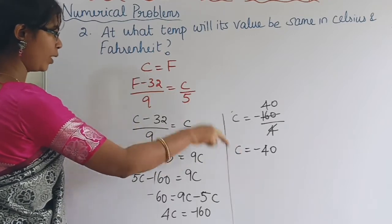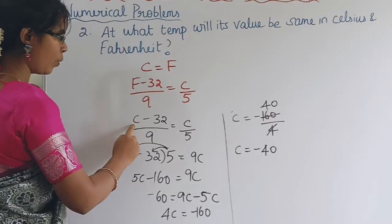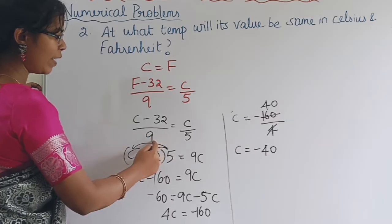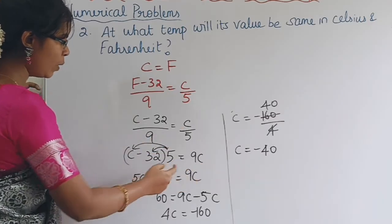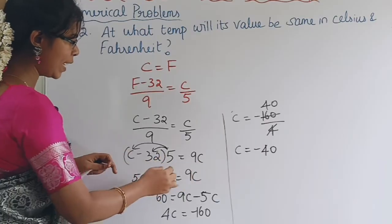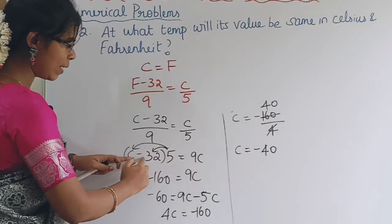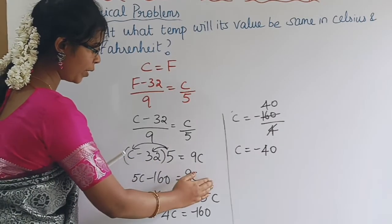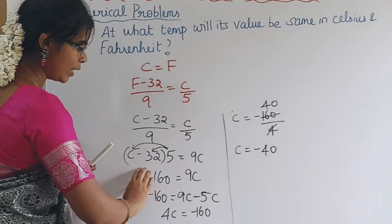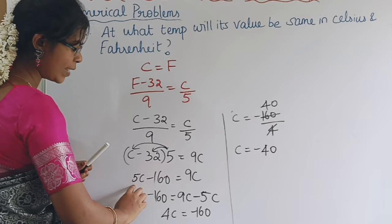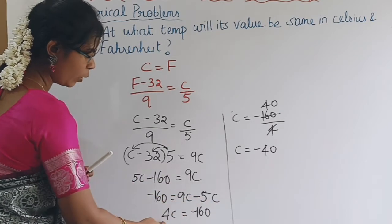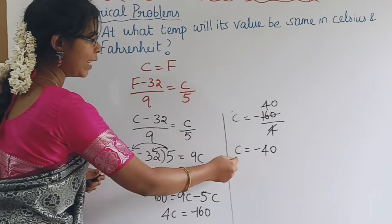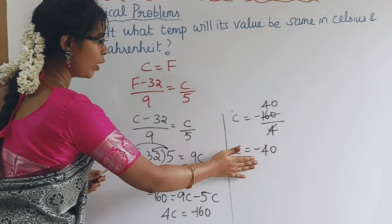Since Fahrenheit equals Celsius, we substitute C for F. Cross-multiplying: 5(C - 32) = 9C. Expanding: 5C - 160 = 9C. Rearranging: -160 = 9C - 5C = 4C. Dividing by 4, we get C = -40. So minus 40 degrees is the temperature where Celsius and Fahrenheit are equal.